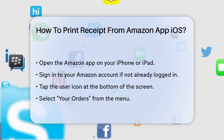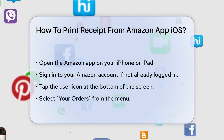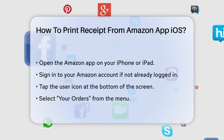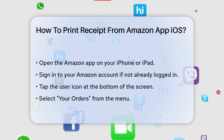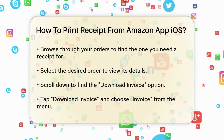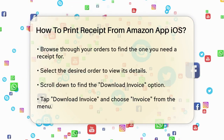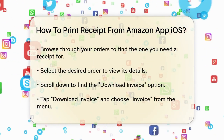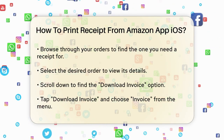Next, navigate to the Your Orders section. You can find this by tapping the User icon at the bottom of the screen and then selecting Your Orders from the menu.